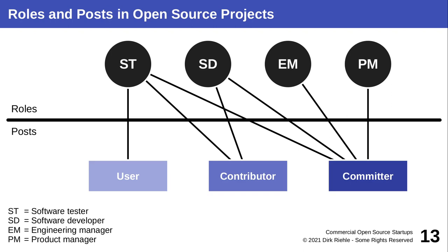When you look at processes, the traditional roles in software development — tester, developer, engineering manager, product manager — are basically mapped onto these positions of user, contributor or committer. Contributors and committers do all the development work, and committers are also engineering managers and somewhat product managers. So we have these functionally separate roles of testing, development, management, and requirements mapped into the comprehensive roles of user, contributor, and committer in open source.